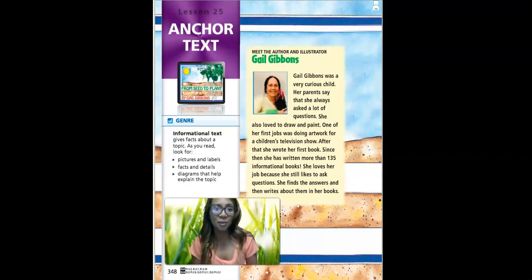This story is an informational text which means it gives a lot of facts and details about a topic. This story also has pictures, labels, and even diagrams to help us explain about plants.